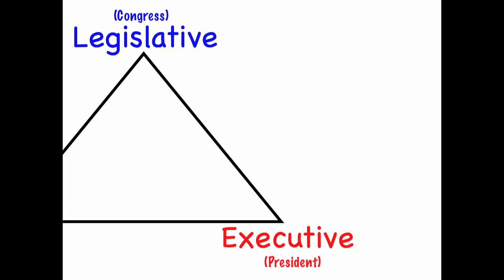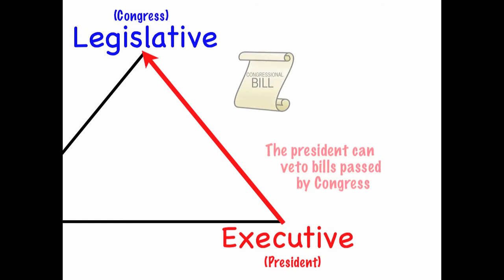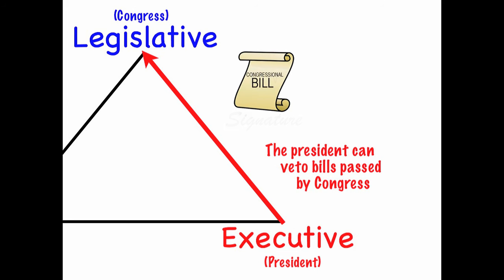The President has power over Congress because the President can veto bills passed by Congress. When the President agrees with a potential law Congress is trying to create, he or she will sign the bill to make it a law. However, the President also has the power to veto the bill to stop it from becoming a law.